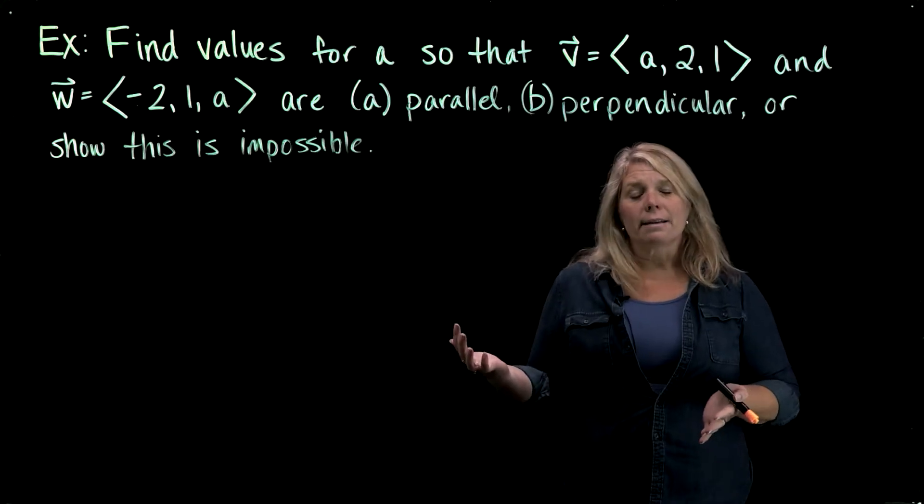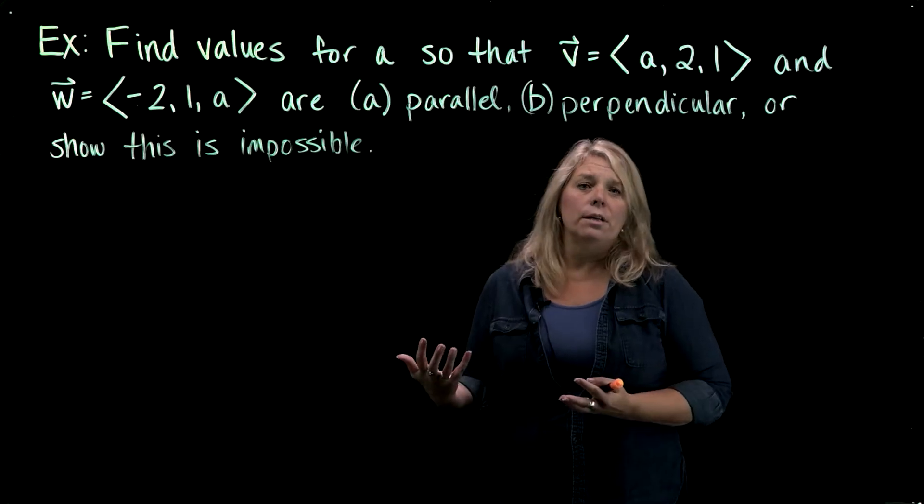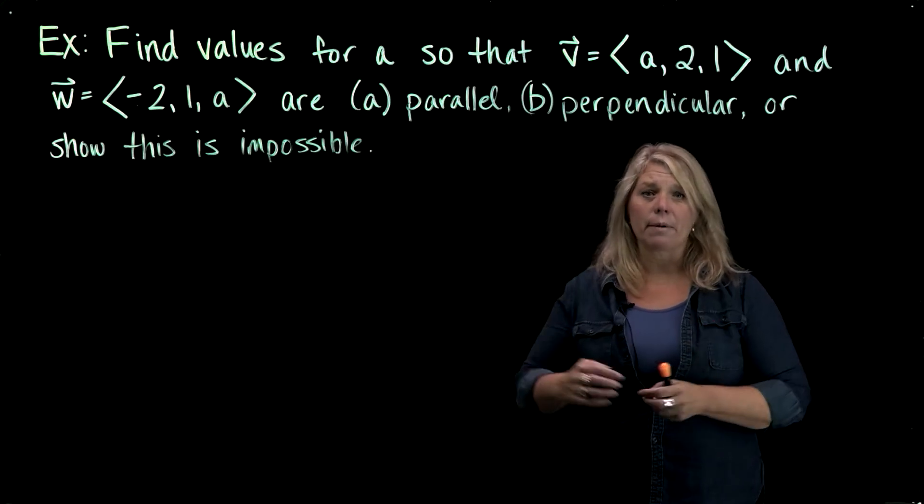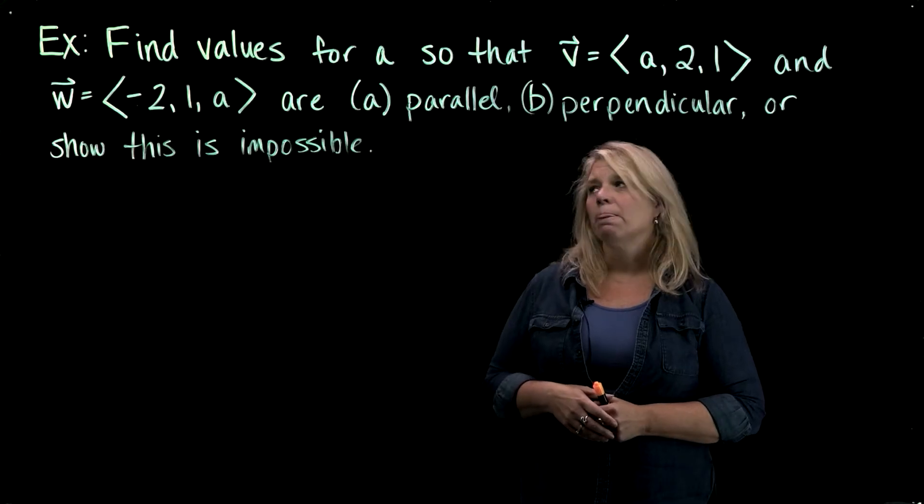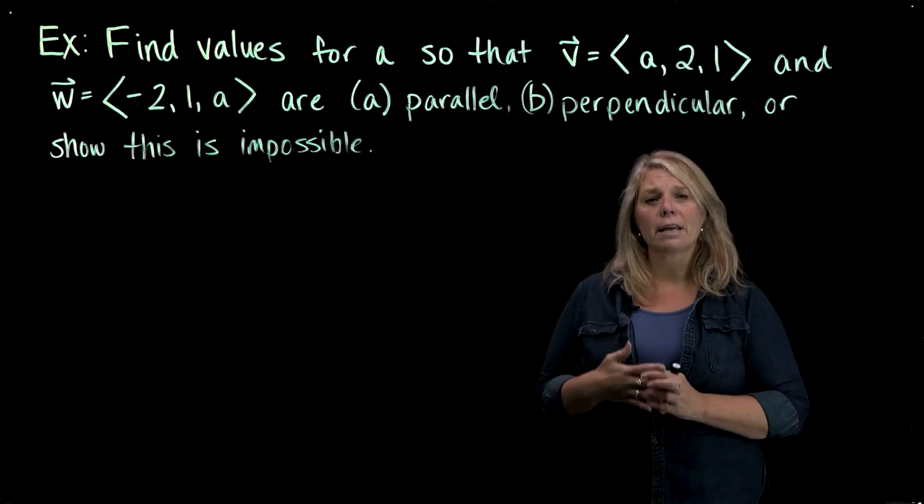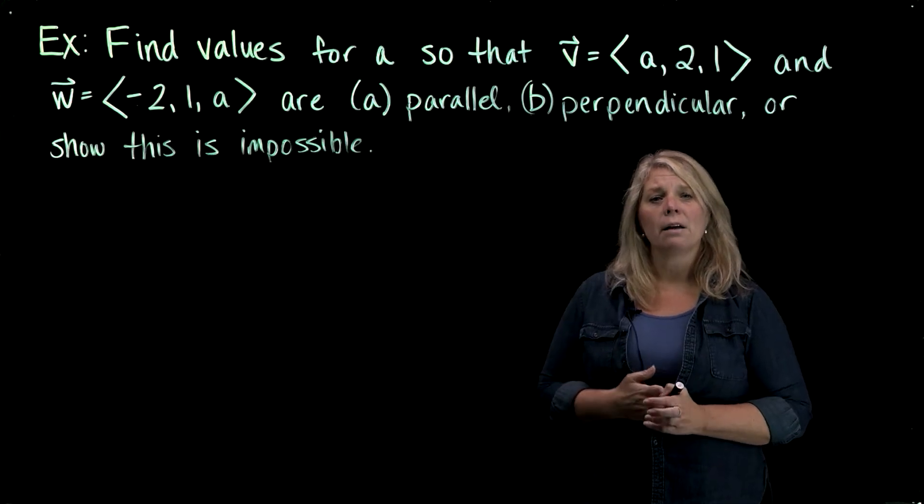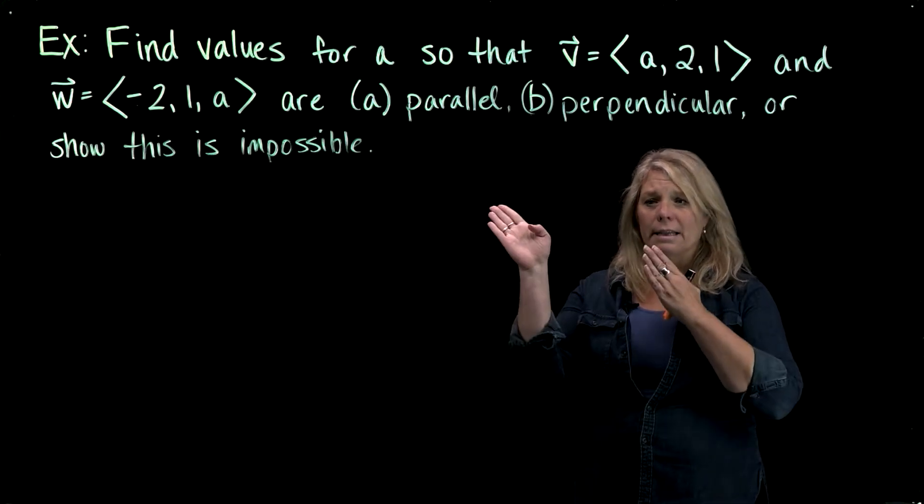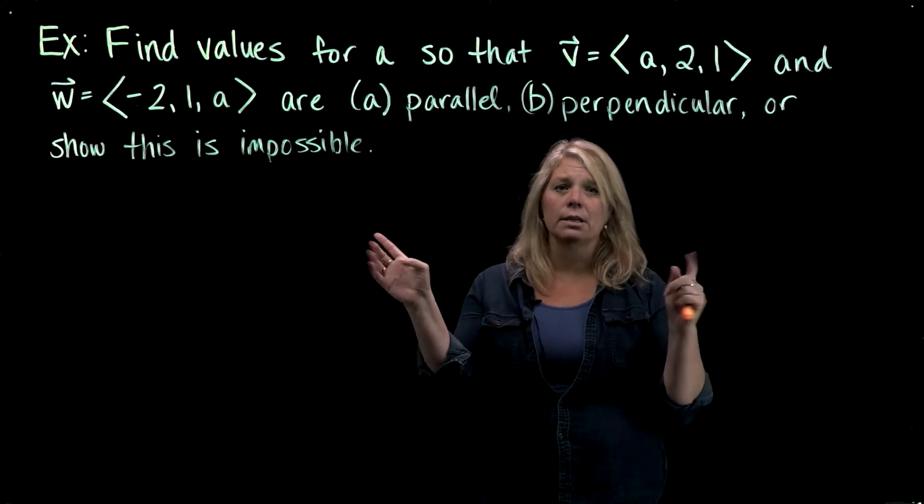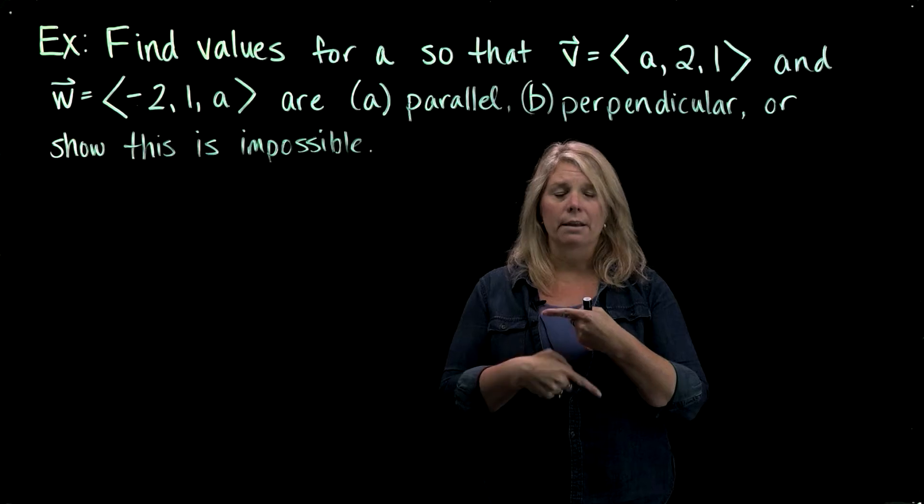There are several ways to think about this and do this. I'm going to do this using some properties of vectors that we've already talked about, but there are other ways to think about these as well. So I'm going to start with the parallel here, and if we think about two vectors being parallel, the main idea there is that they would be going in the same direction, or perhaps in exact opposite directions, and they would still be parallel to each other.